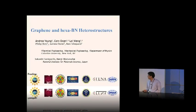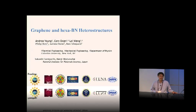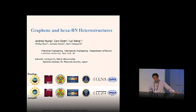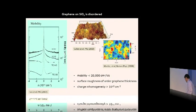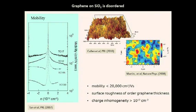The original title of the talk is 'graphene and hexagonal boron nitride heterostructures.' But it became clear that with only this topic I probably cannot cover one hour, so I will start with this, but along the way we'll visit a few different topics. The motivation for the graphene/hBN heterostructure is basically the quest for higher mobility in graphene.